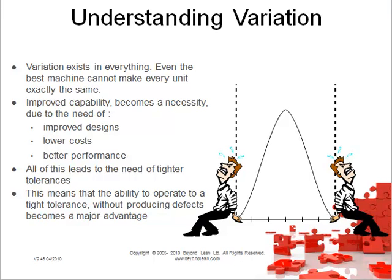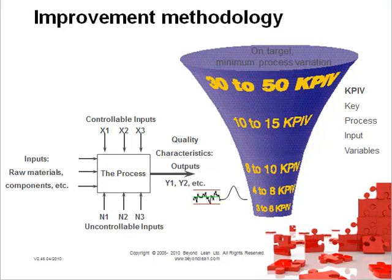Let's understand variation for a minute. Variation exists in everything — even the best machine can't make every unit exactly the same. Improved capability becomes a necessity due to the need for improved designs, lower costs, and better performance. All of this leads to tighter tolerances, meaning the ability to operate to a tight tolerance without producing defects becomes a major advantage. We're looking to reduce the variation of those inputs to ensure we get standardized outputs — reducing variation on key process input variables to ensure outputs are at a much higher quality.